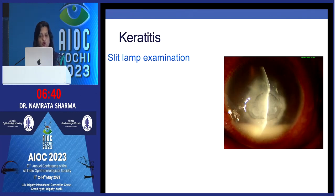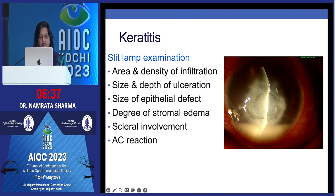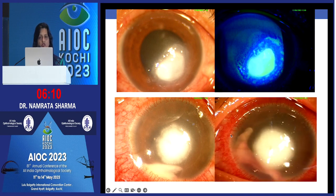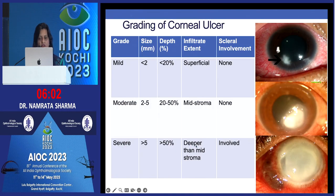It is important to do a good slit lamp evaluation and look at the area and density of infiltration, size and depth of ulceration, degree of stromal edema, scleral involvement, and anterior chamber reaction. Record this at every visit. There is a difference between the size of the epithelial defect and size of the stromal infiltrate — monitor both. Whether the hypopyon is fixed or mobile is also important, as fixed hypopyon is described for fungal keratitis.